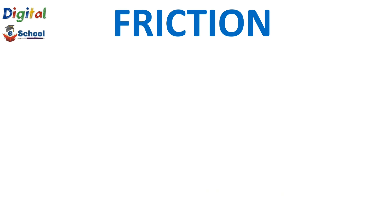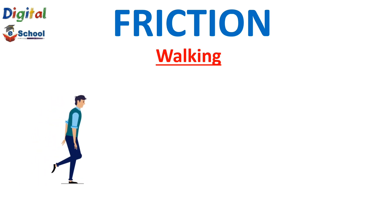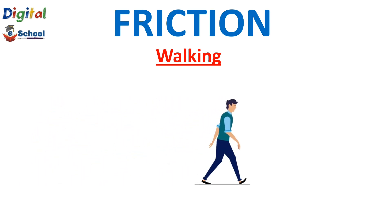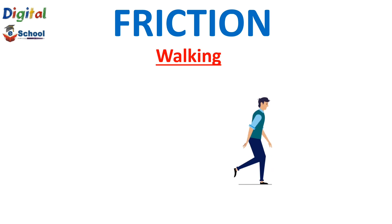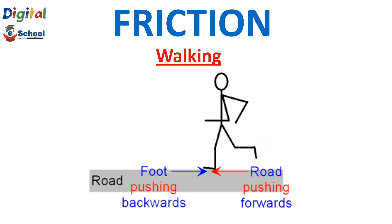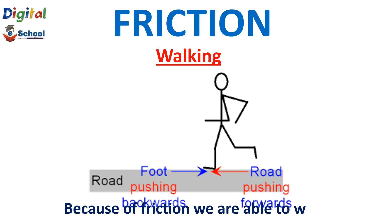The first example we take is where friction helps us — that is walking. We can walk because of friction. When we walk, we push our foot backward to the ground. Because of friction, we are able to walk.